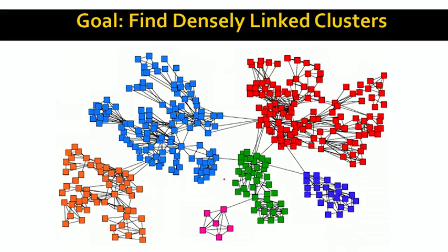The question is: how do we find these kinds of clusters, and what would they correspond to? The task is in some sense nicely defined. Given a network, we want to find sets of nodes where there are lots of connections between the members of the set and few connections to the outside. Given the network in this slide, what we would like to do is identify these different clusters, indicated here with different colors.